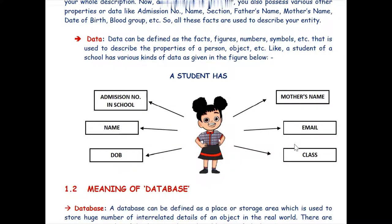As you can see on the screen, we have a student, and every student has some basic characteristics, properties, or details — like a student has an admission number, name, date of birth, mother's name, email, class, section, mobile number, blood group, and many more. We can term all of these as data.